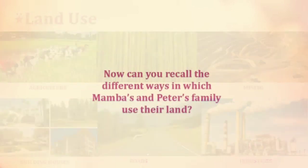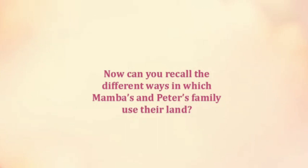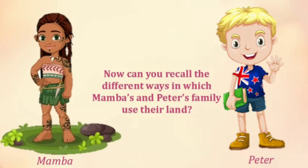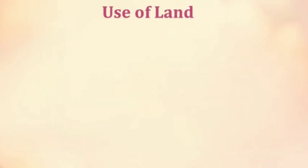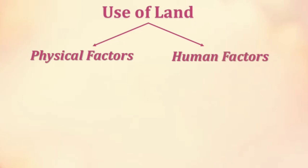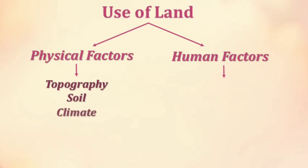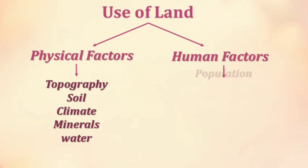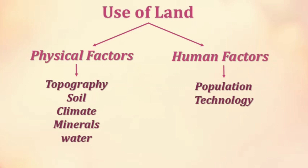Can you recall the different ways in which Mamba's and Peter's family use their land? The use of land is determined by the physical and the human factors. The physical factors include topography, soil, climate, minerals and availability of water. On the other hand, the human factors include population and technology, which are the important determinants of land use pattern.